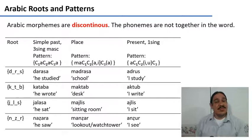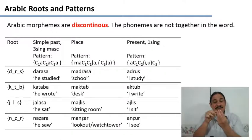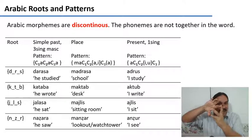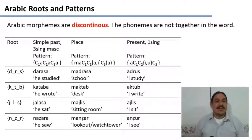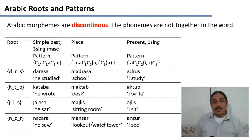Let's imagine a world where morphemes were discontinuous, where the sounds in a root didn't always have to be next to one another. This is how the verbs of Arabic work — and really all of the grammar of Arabic works this way.